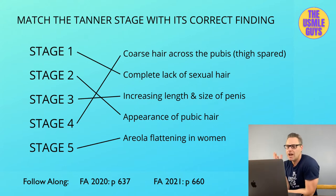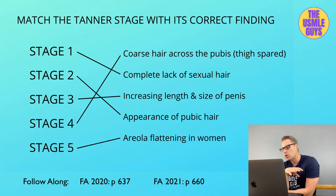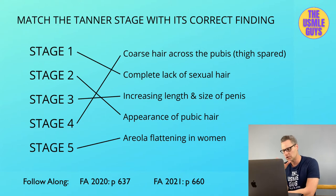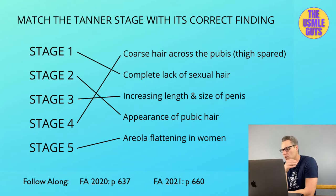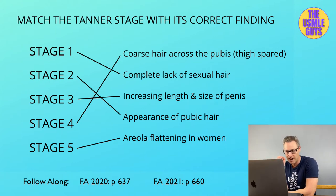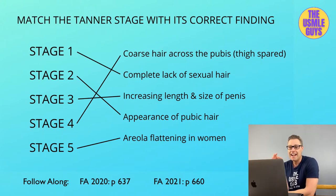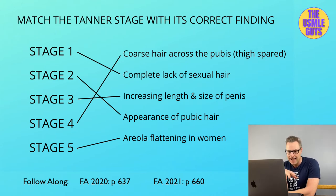The final Tanner stage five happens around 15 years of age and is characterized by coarse pubic hair in both males and females that crosses onto the medial aspect of the thighs — that's one key way to differentiate stages four and five. In males, the testes and penis enlarge to adult size. In females, the breasts take their final adult shape and the areola, which was previously raised, now flattens.